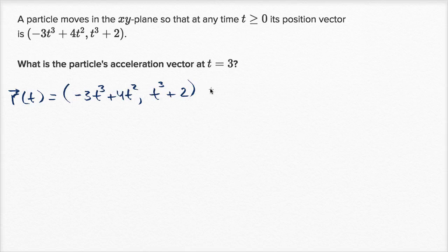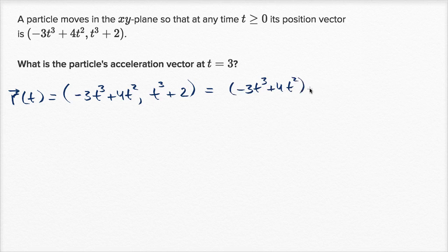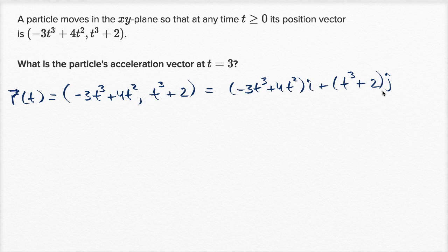Another way of writing this is unit vector notation. We can write negative three t to the third plus four t squared times the unit vector in the horizontal direction, plus t to the third plus two times the unit vector in the vertical direction. This denotes the same thing: the x component is the horizontal component, and the y component is the vertical component.